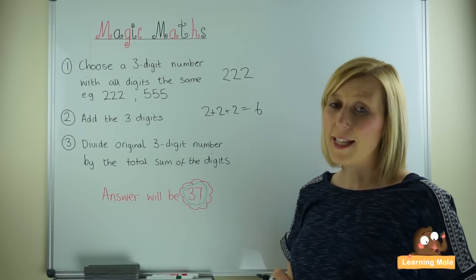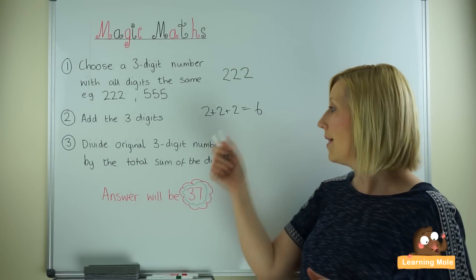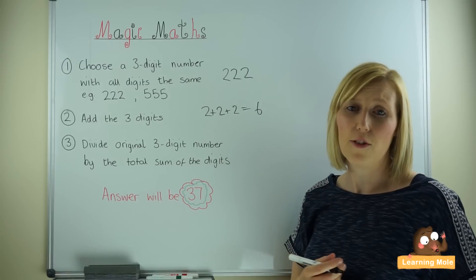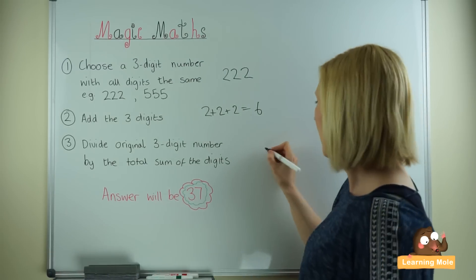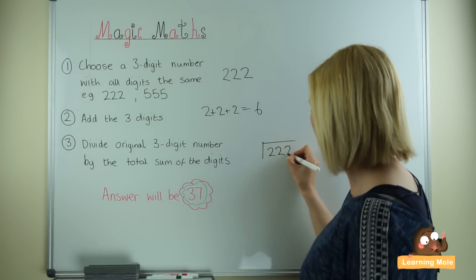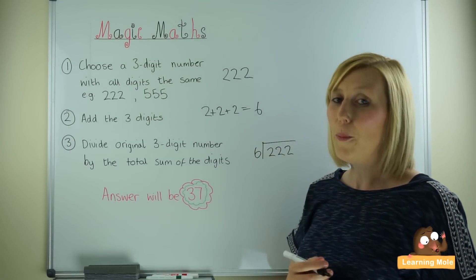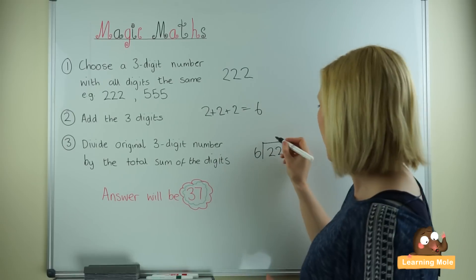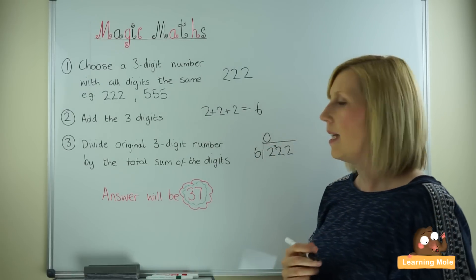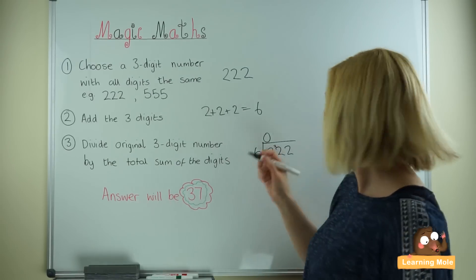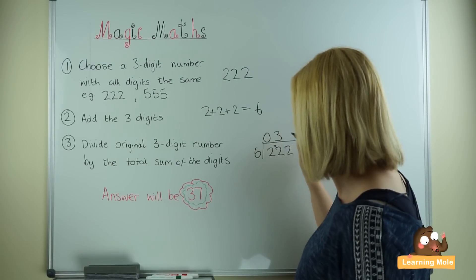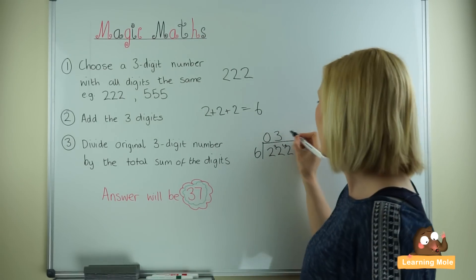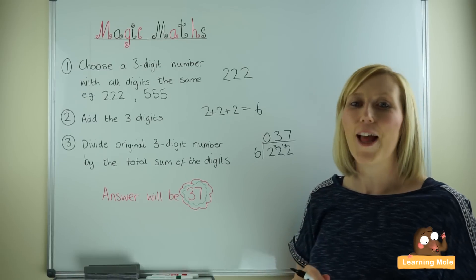Then you're going to divide the original number that you started with by the sum of the digits - so 222 divided by 6. This is a great opportunity for some written division to be taking place. 222 divided by 6, and we're hoping that the answer is going to be 37. 2 divided by 6, of course we cannot do, so we carry it over. 6 goes into 22 three times, and you've got 4 left over. Then 6 goes into 42 seven times. Hey presto, your answer is 37.